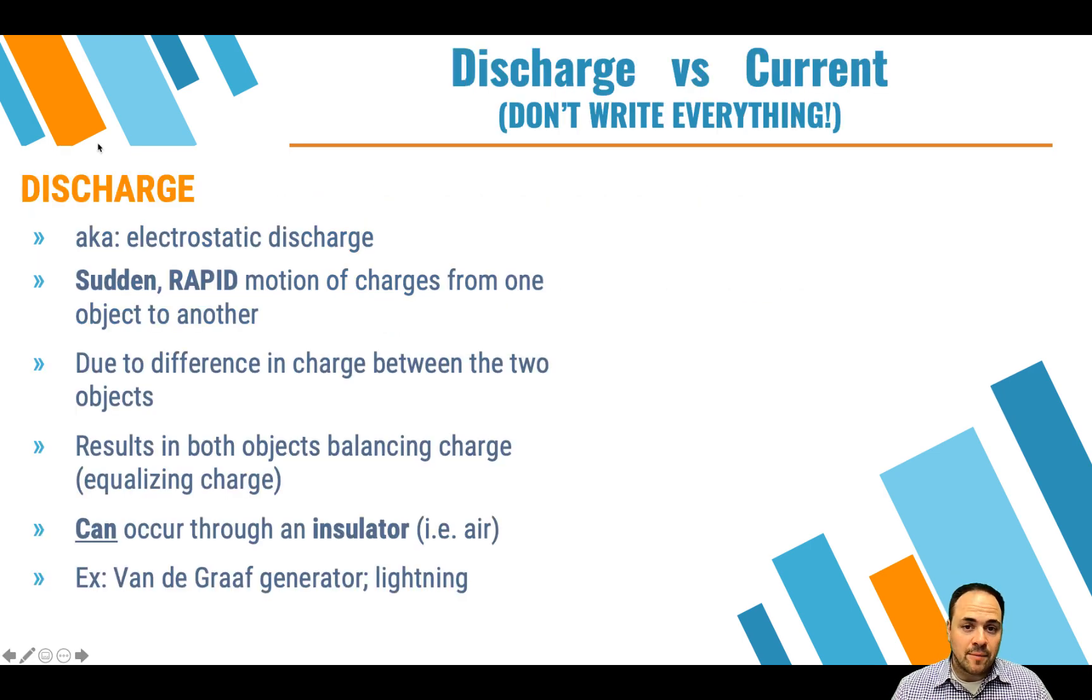Now so far we've been talking about static electricity and static, usually meaning not moving, is not quite accurate because we can still have the movement of charge between objects. We refer to this as electrostatic discharge and this is really quick. Common examples, lightning for example, the Van de Graaff generator that we see in class that can throw sparks through the air, which is an insulator. A lot of times we'll see electrostatic discharge through insulators, air being one of them.